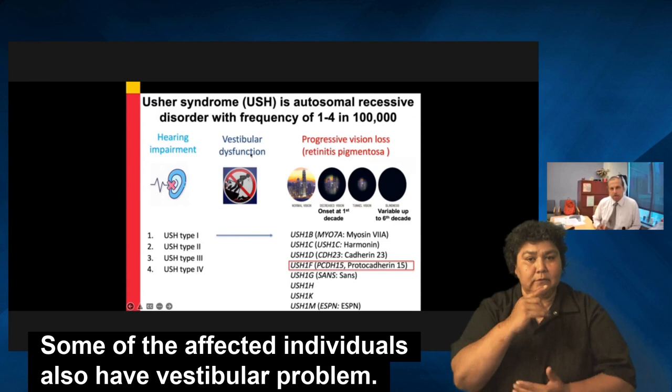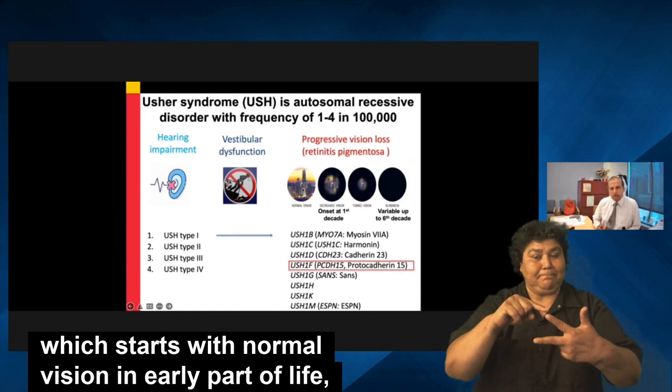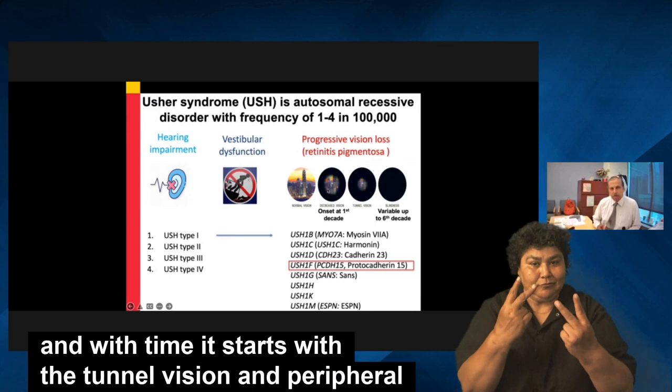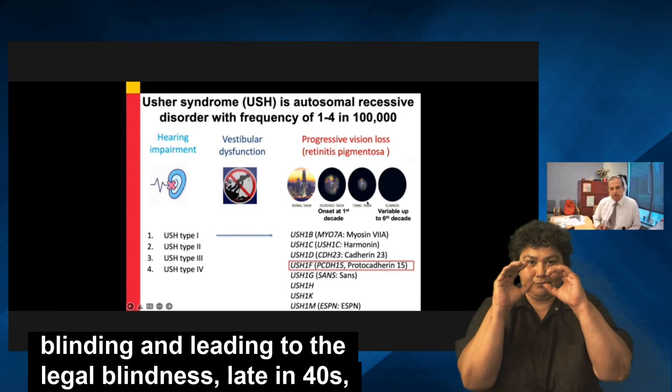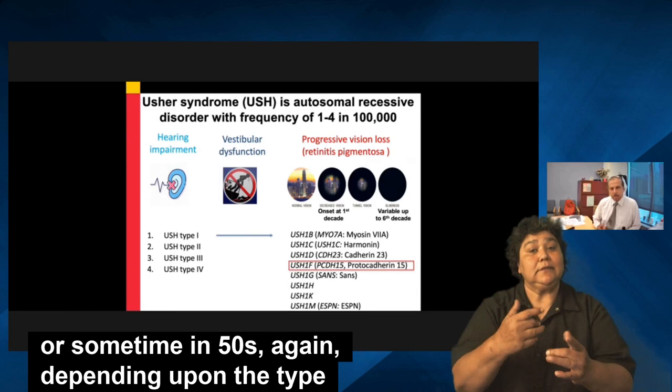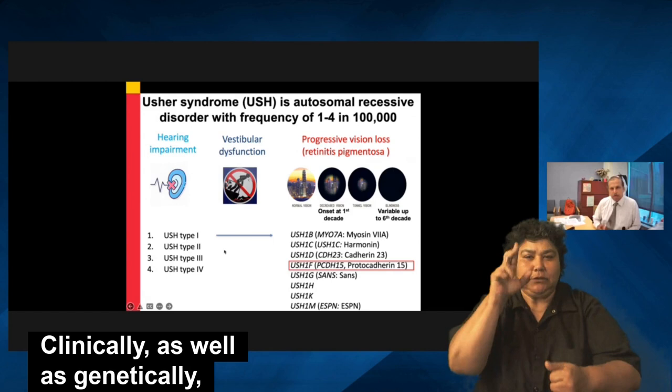Some of the affected individuals also have vestibular problems, and they have a progressive vision loss which starts with normal vision in the early part of life. With time, it starts with tunnel vision and peripheral blinding, leading to legal blindness in the late 40s or sometimes 50s, depending upon the type of Usher syndrome.